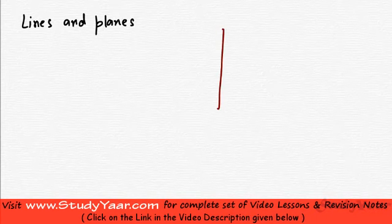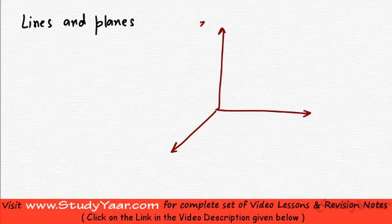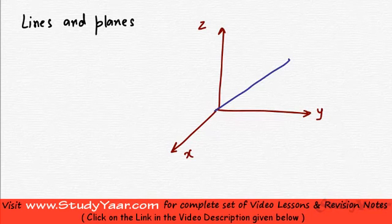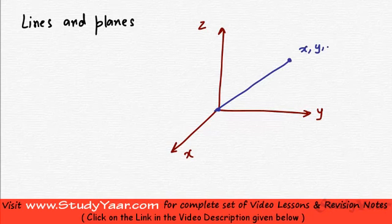Let us suppose I have my coordinate axes — I have Z over here, I have Y over here, I have X over here — and I have a line which is like this. So essentially it's a line connecting the origin and an arbitrary point X, Y, Z.